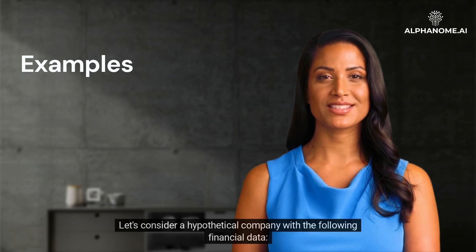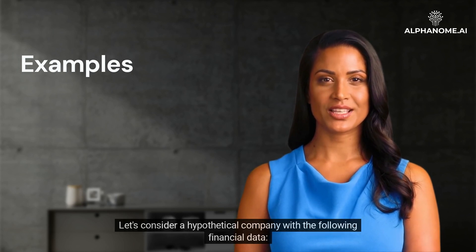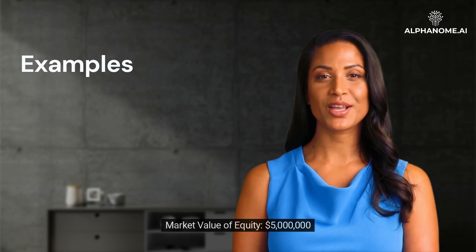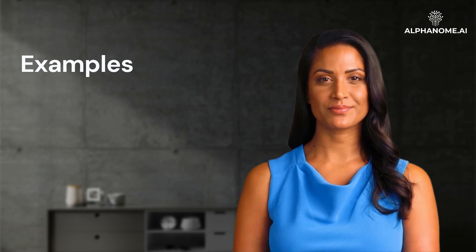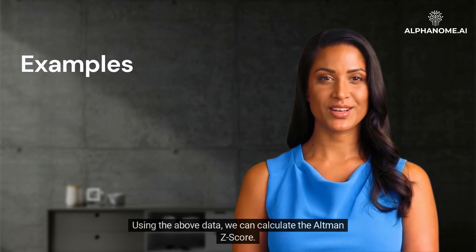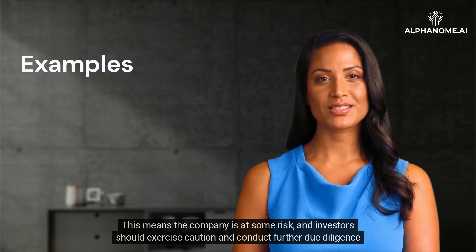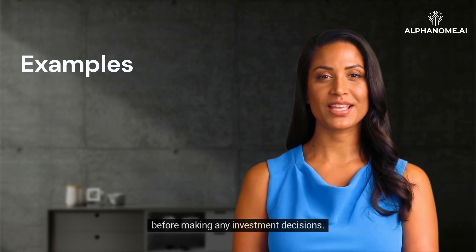Examples. Let's consider a hypothetical company with the following financial data: Working Capital $2 million, Total Assets $10 million, Retained Earnings $1,500,000, EBIT $1 million, Market Value of Equity $5 million, Total Liabilities $6 million, and Sales $8 million. Using the above data, we can calculate the Altman Z-Score. Based on the provided financial data, the Altman Z-Score is calculated to be 2.08, which falls into the gray zone. This means the company is at some risk, and investors should exercise caution and conduct further due diligence before making any investment decisions.